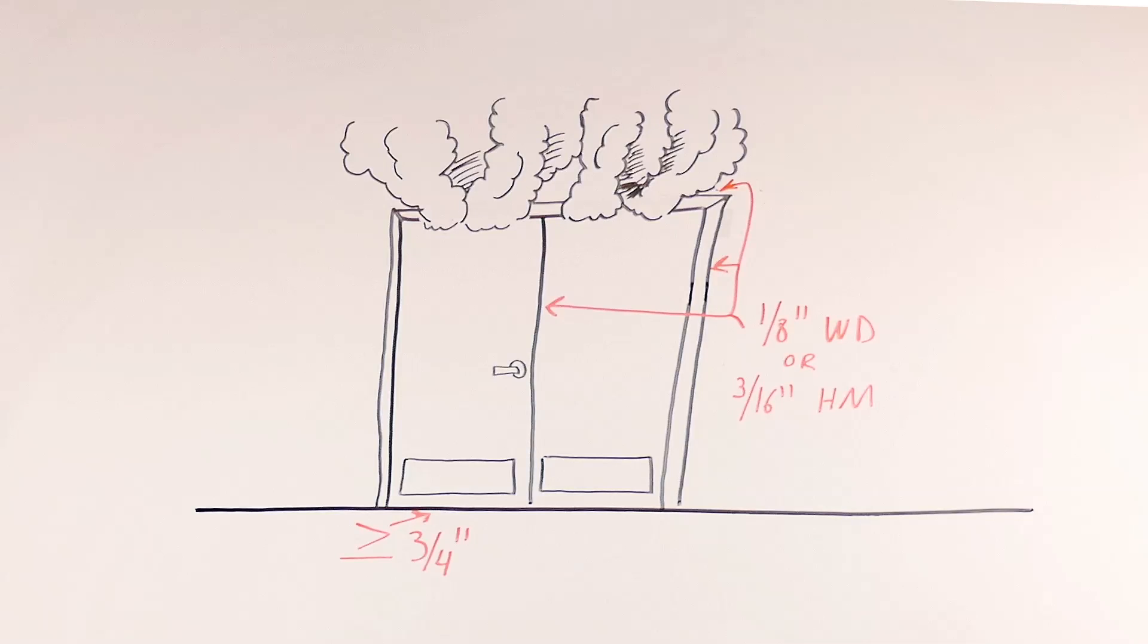Some fire door assemblies are also required to have gasketing at the head and jambs to reduce the amount of smoke infiltration during a fire.